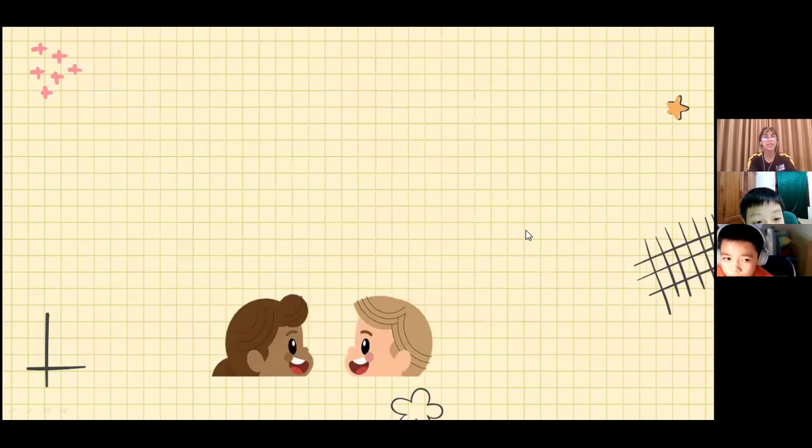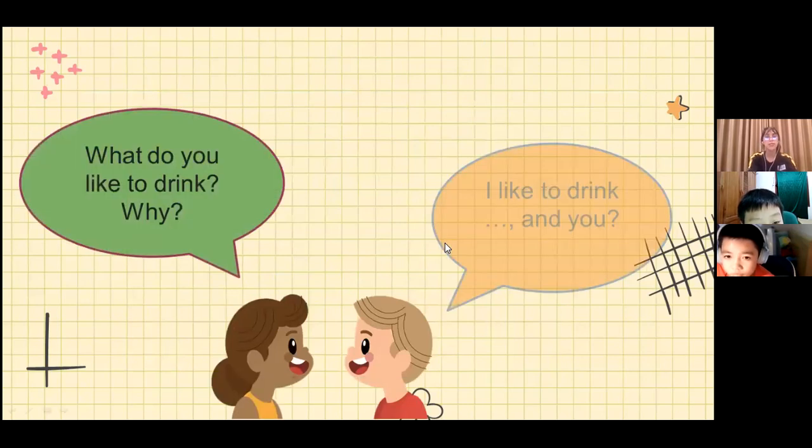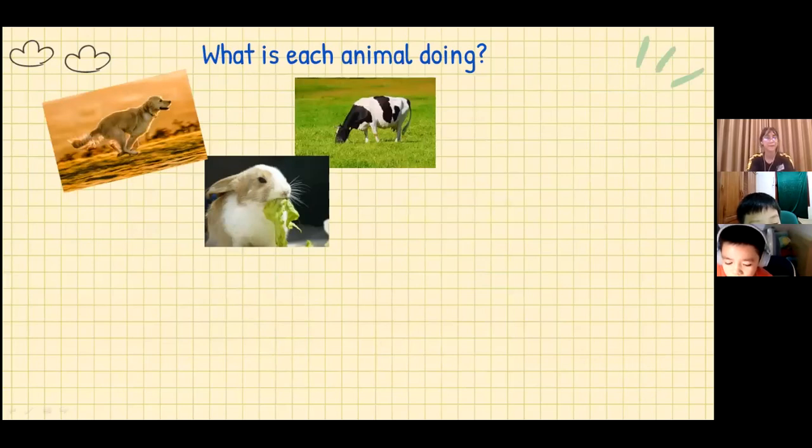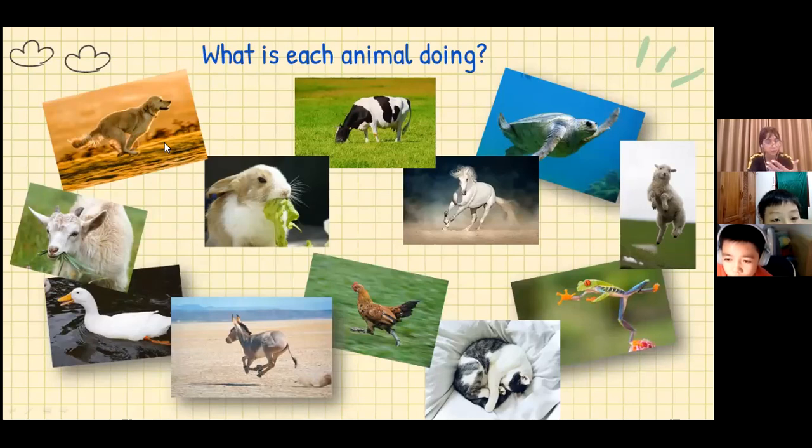So, now, let's move to these pictures and every time, Mark, you will tell me what each animal is doing. Okay. Let's start with the goat. What's the goat doing? The goat is eating. How about the dog? What's the dog doing? The dog is running. How about the cow? The cow is eating.